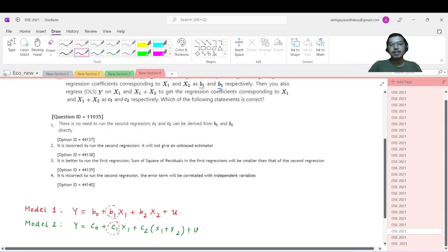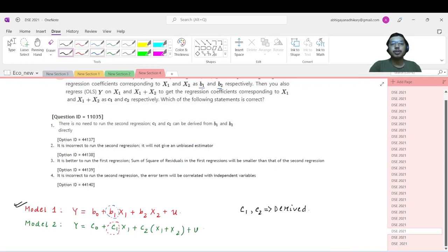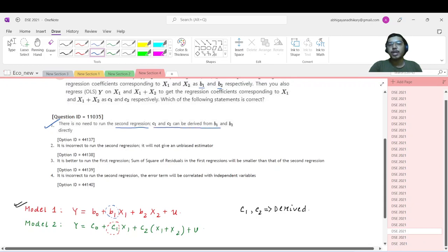So that means basically, if you are running Model 1 successfully, then automatically the coefficients c1 and c2 can be derived. So I think you have already guessed by now that the answer to this question is option number 1. There is no need to run the second regression because c1 and c2 can be derived from b1 and b2 respectively. Thank you so much.